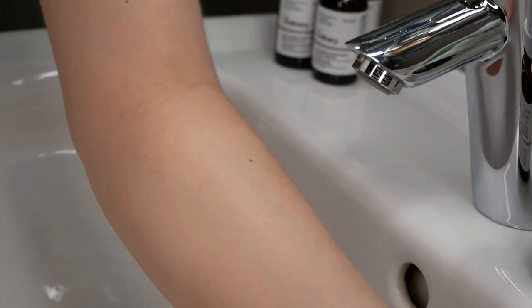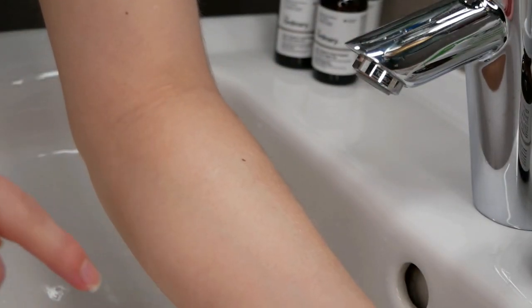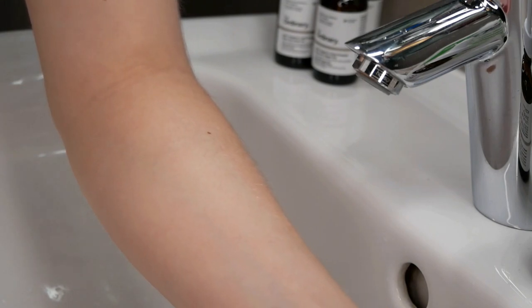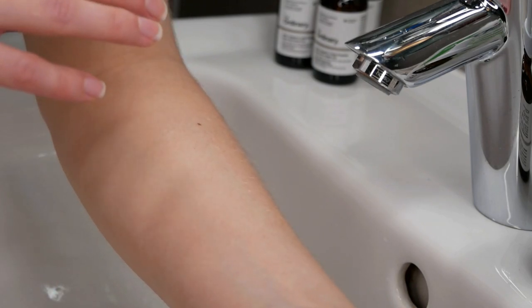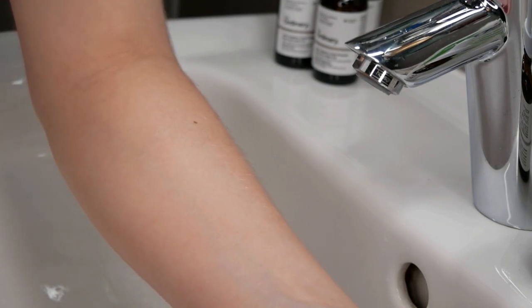If you see an irritation during the 24 hour patch test on your upper forearm area such as redness, swelling, dryness, blistering, or itchiness, then please do not use it on your face as this is a warning sign. You have it on your upper forearm area and not on your face.